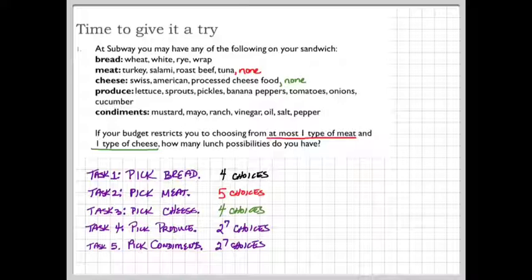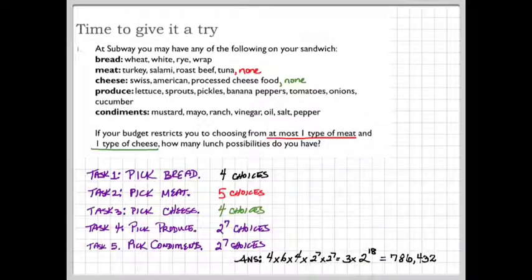Now, using the product rule, since we want to have all these tasks completed, we multiply to get the final answer. And of course, I made a mistake previously, so it's going to change my answer. So rather than six, that better be a five. Five, and that will change my final answer here to be something different.